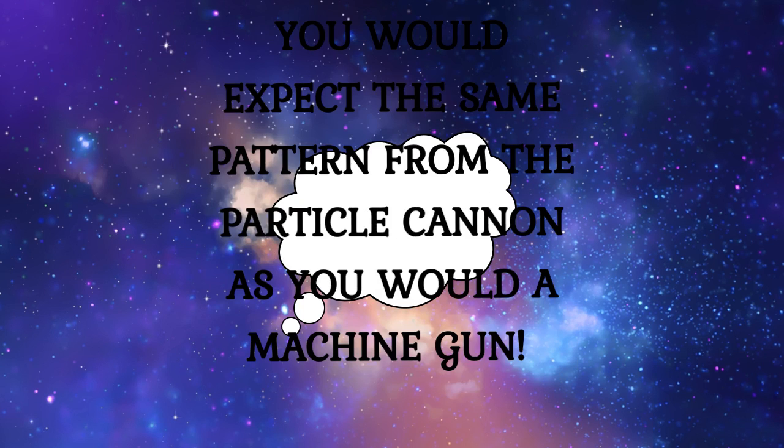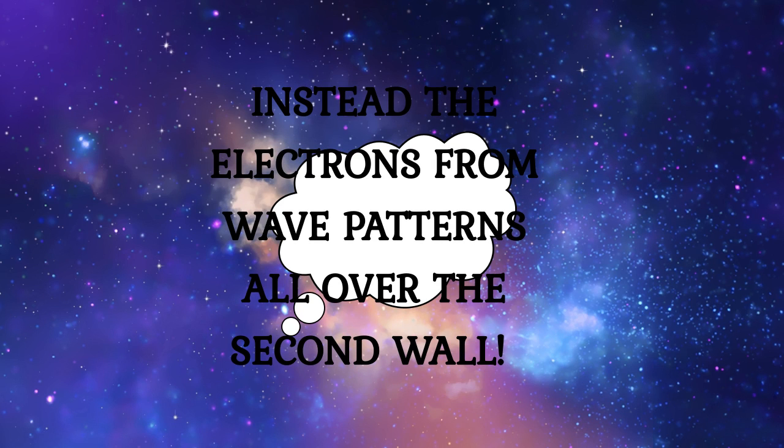You would be correct from a classical physics perspective to expect the exact same results from the electron cannon as you would the machine gun. But that is not what happens in the double slit experiment. The electrons do not form an outline of the two slits on the second wall. Instead, the electrons form a wave pattern, making impressions all over the second wall.